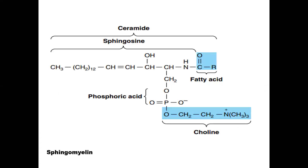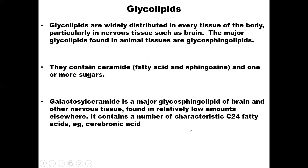Structurally, sphingomyelin has a sphingosine backbone. When a fatty acid is attached to the sphingosine backbone, you form a structure called ceramide. Generally, sphingomyelin consists of ceramide, phosphoric acid residue, and choline — or you can say it consists of sphingosine, fatty acid, phosphoric acid, and choline.